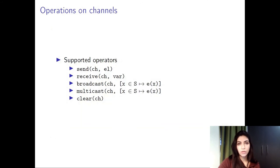We have supported several operations on channels. You can send a single element to a channel. You can receive. Receive is enabled when a non-empty channel receives a message into a variable, as can be seen here in the second argument. Broadcast and multicast send messages along several channels in an array, while clear empties the channel.